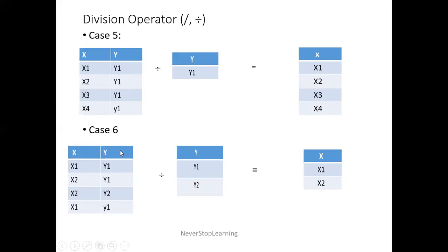Case 6: table A has columns X and Y, table B has column Y with tuples Y1 and Y2. B is a proper subset of A. The resultant will have column X. Checking tuples: X1 is associated with Y1 but not with Y2, so X1 will not come in the result. X2 is associated with Y1 and Y2, so only X2 will come. Note: there appears to be a typing mistake in the slide — if Y2 were listed for X1, then X1 would also come.